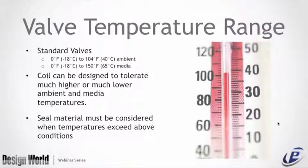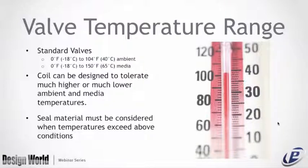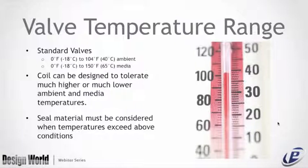Temperature range: our standard valves operate from 0°F (−18°C) to 140°F (40°C) ambient, and 0°F to 150°F (65°C) media. Coils can be designed to tolerate much higher or lower temperatures, and seal materials must coincide with temperatures exceeding these conditions. The total temperature of a Class A coil is 150°C, Class F is 155°C, and Class H is 180°C. Consider coil features when ambient and media temperatures are extreme.